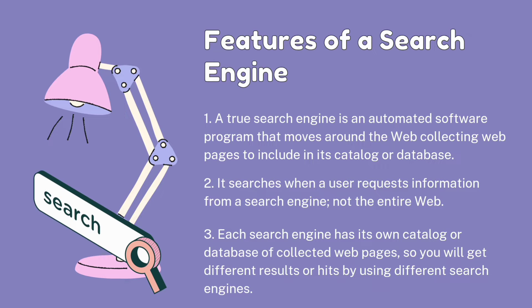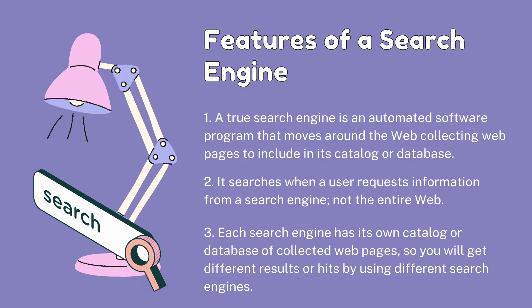Here are the features of a search engine. First, a true search engine is an automated software program that moves around the web collecting web pages to include in its catalog or database. Second, it searches when a user requests information — not the entire web. Third, each search engine has its own catalog or database of collected web pages, which is why you get different results by using different search engines.